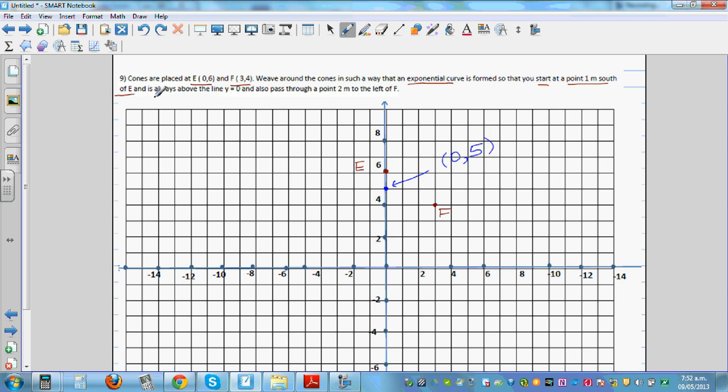And always above the line Y equal to 0. Which line is called Y equal to 0? The X axis is called Y equal to 0. So you want to go in an exponential curve. That means you are above this X axis and you are passing through this point, which is 0,5.